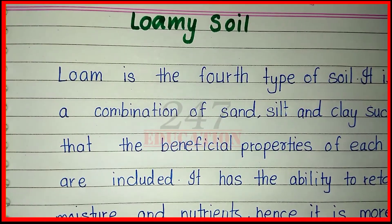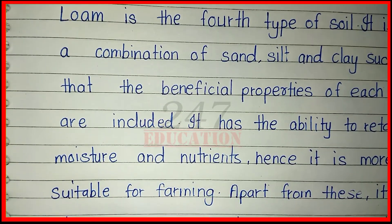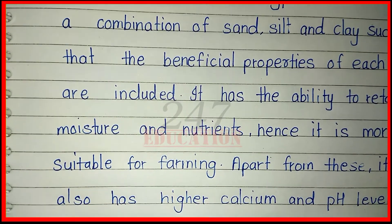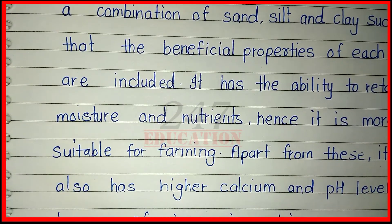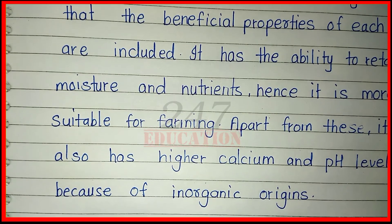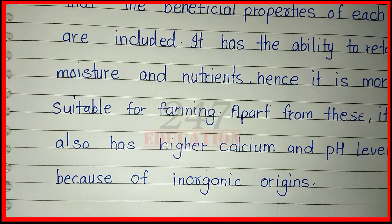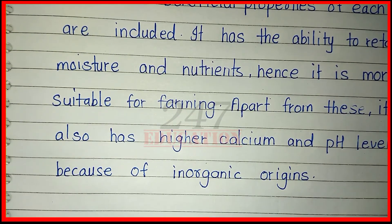Loam is the fourth type of soil. It is a combination of sand, silt, and clay such that the beneficial properties of each are included. It has the ability to retain moisture and nutrients, hence it is more suitable for farming. Apart from this, it also has higher calcium and pH levels because of inorganic origins. Thank you.